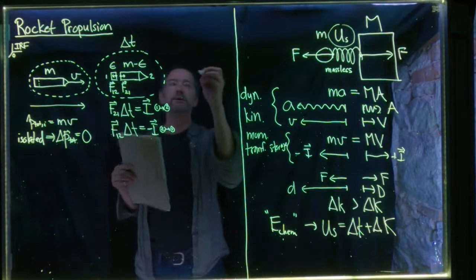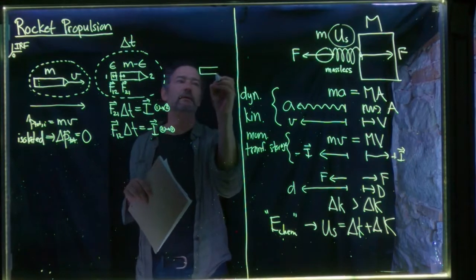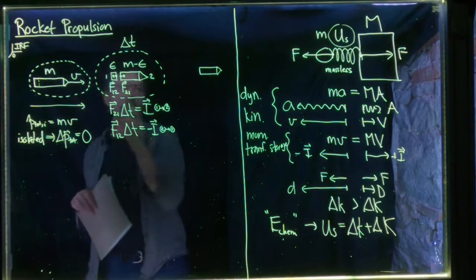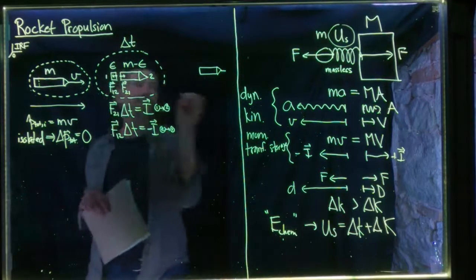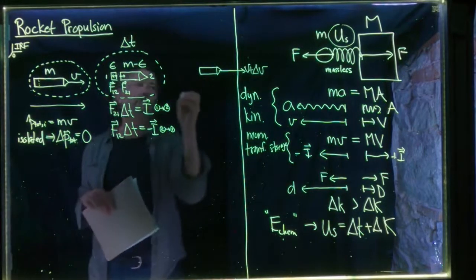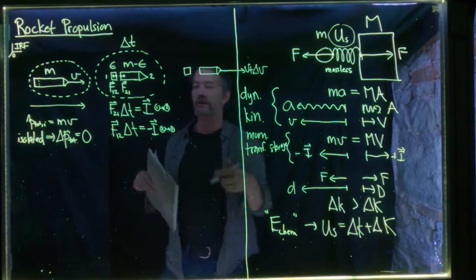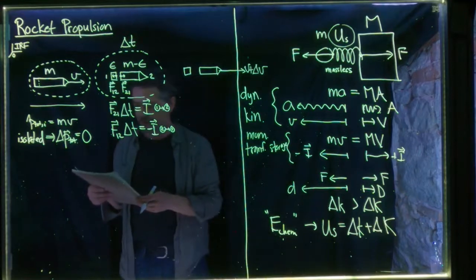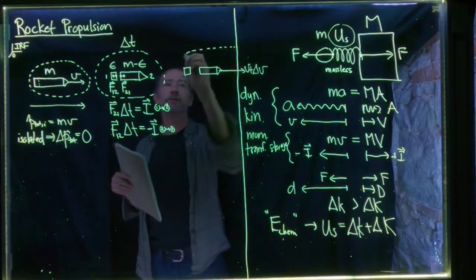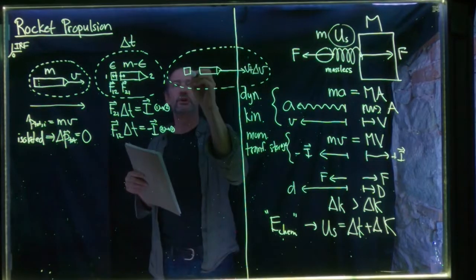At the end of time interval delta T, we have the remainder of the rocket — now shorter, less mass — and we hope its velocity is greater than V. Indeed it will be: its velocity is now V plus delta V. There's a chunk of exhaust gas particles moving to the left, at least when the rocket's speed is slow.